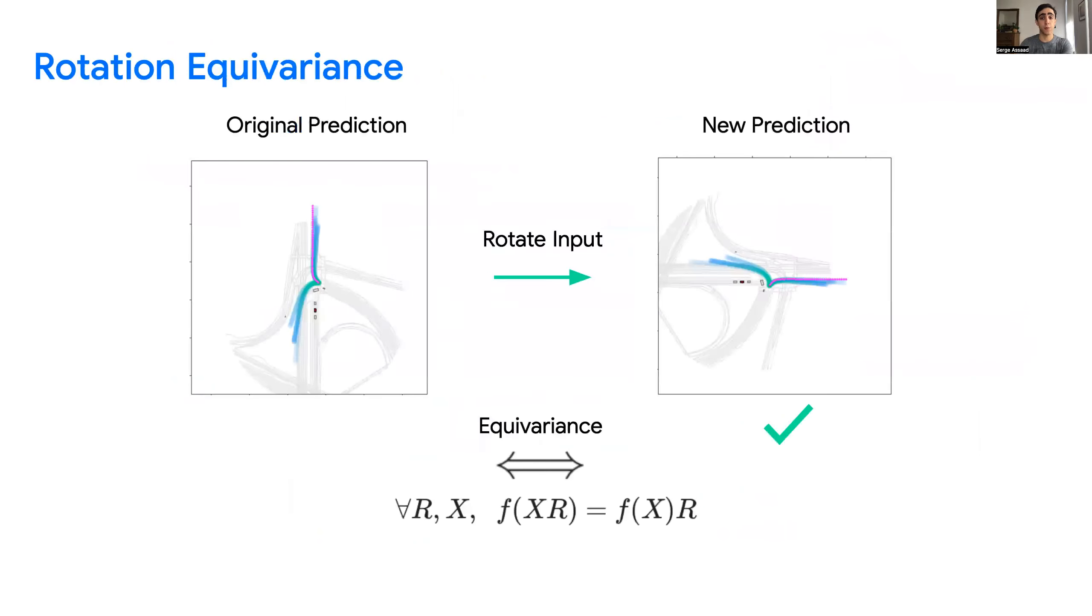For behavior prediction tasks, we want a similar property. If the input scene is rotated, we want the predictions to be identical, but rotated by the same amount as the input. This is known as rotation equivariance.